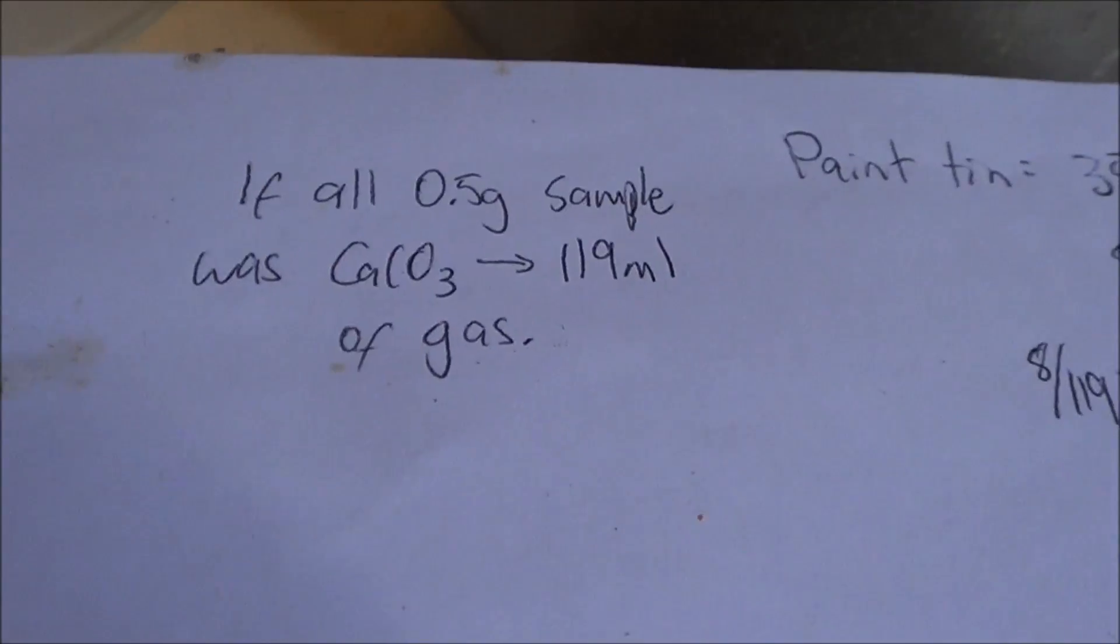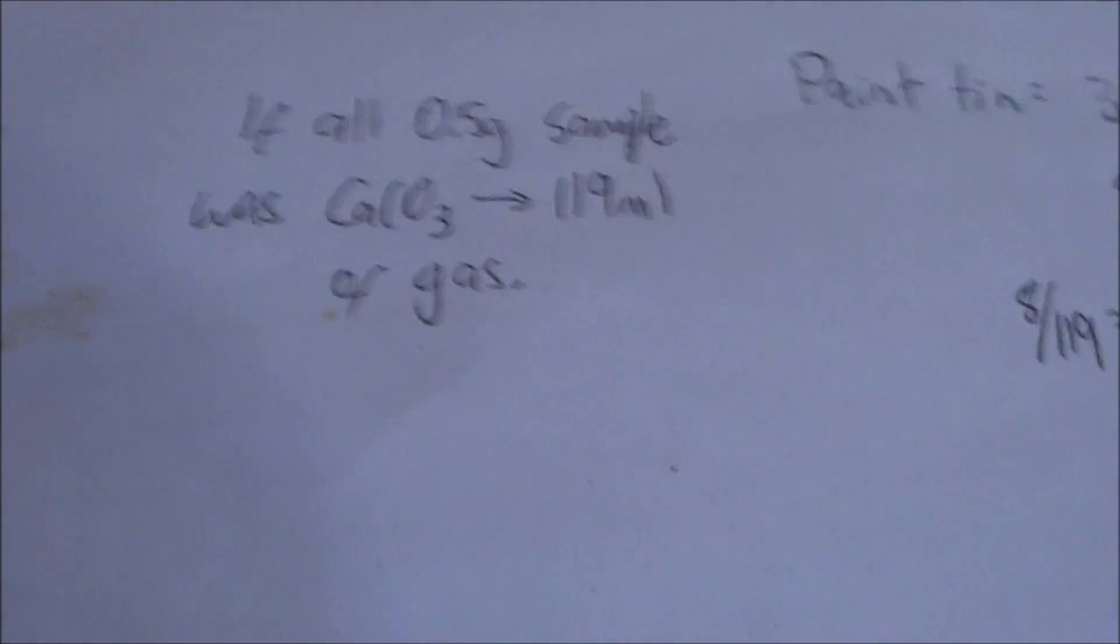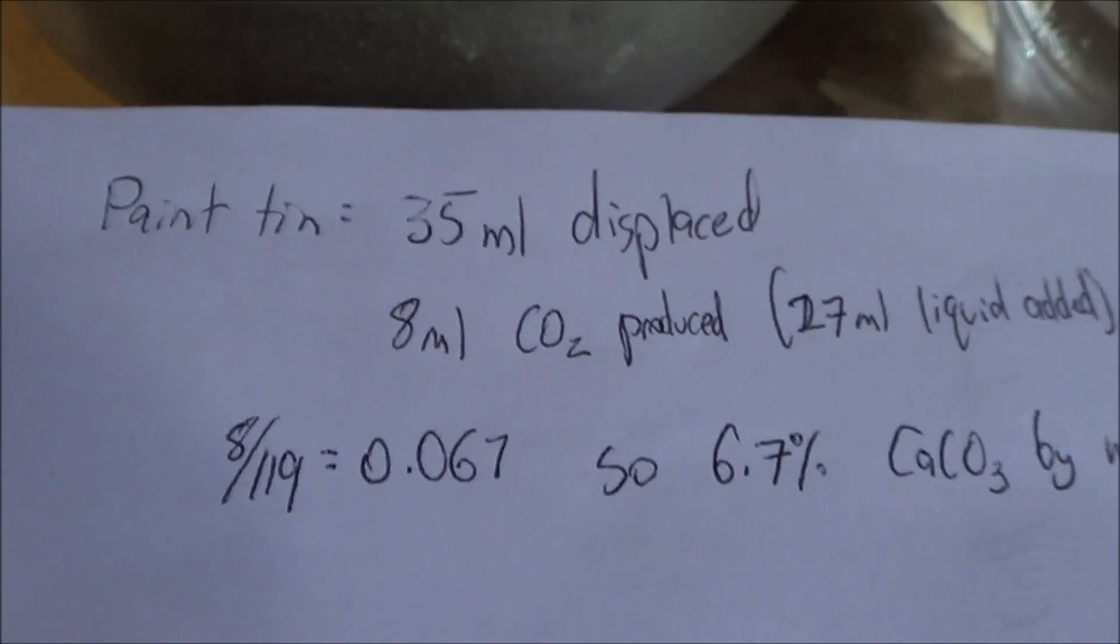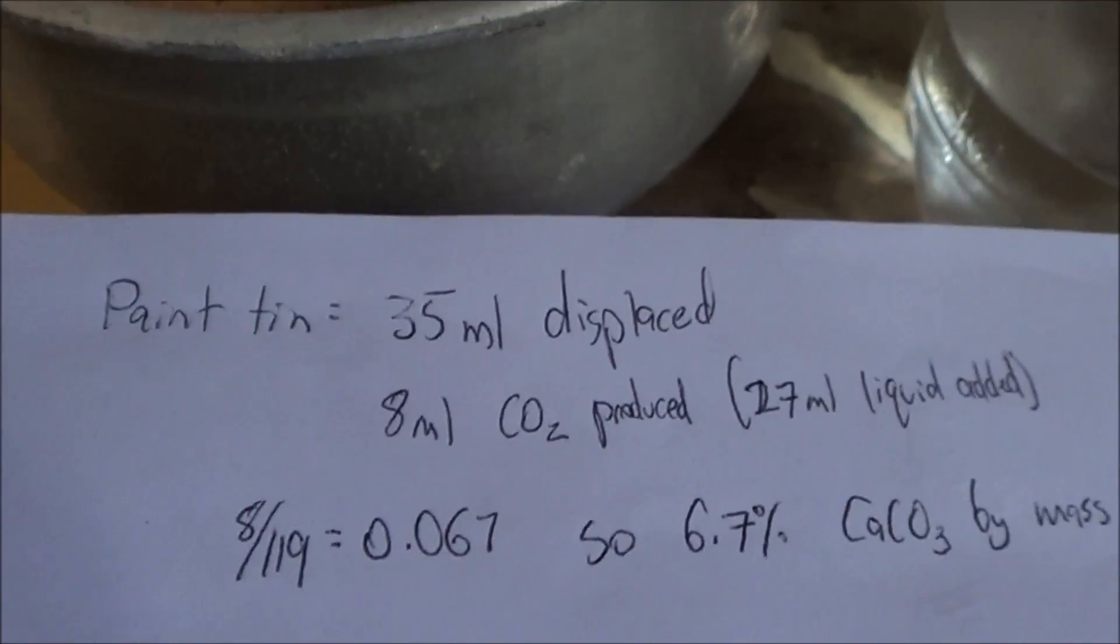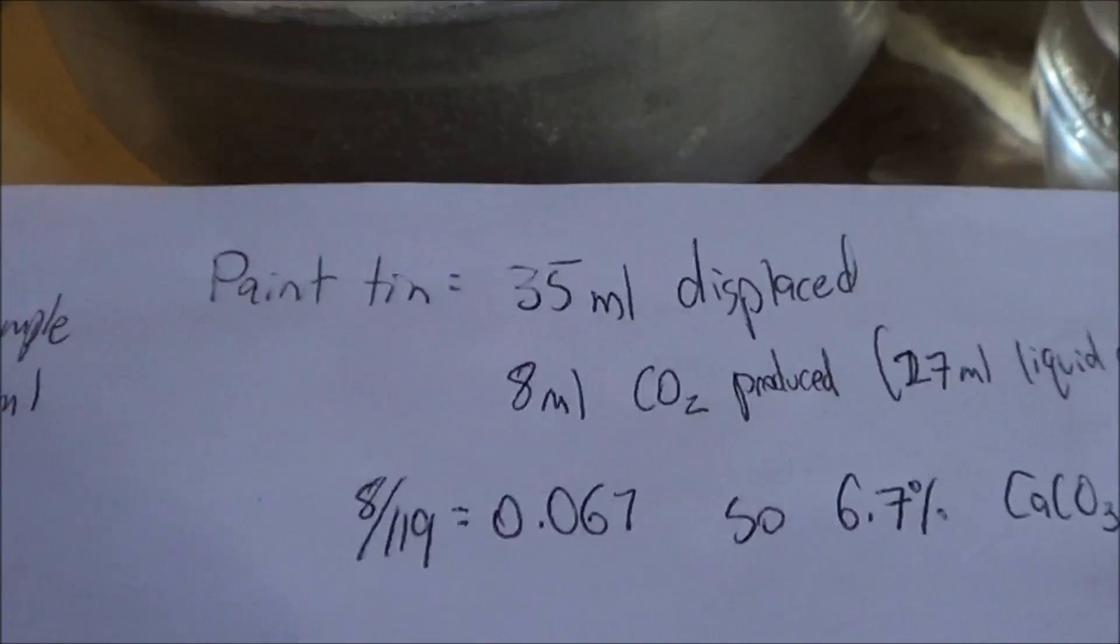If the half gram sample was calcium carbonate, then we'd form 119 mils of gas on complete reaction with acid. Now, the paint tin sample displaces 35 mils, which means 8 mils of gas, so it's 6.7% calcium carbonate, which is really low.